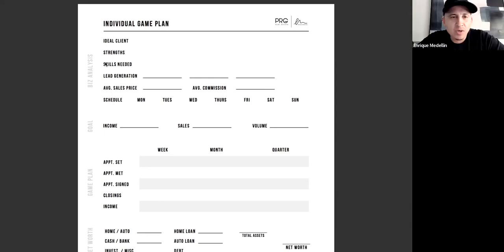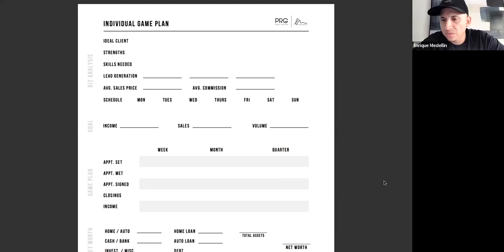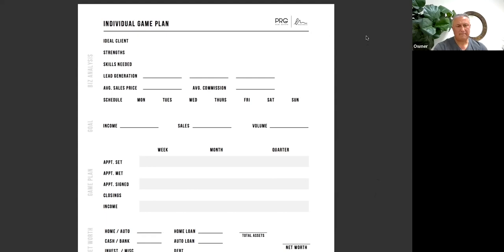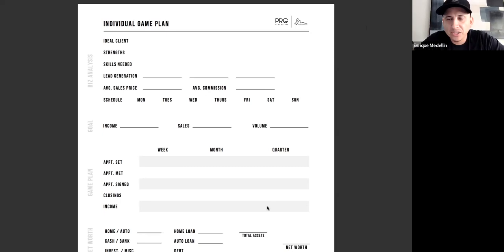We also went over what skills are needed — what are the things you need to work on, areas of the business that you're just not strong at yet or need training on. Maybe it's the buyer presentation, maybe it's the contract. Just getting really detailed on the areas you need to focus on, so these could be what you work on this next quarter.